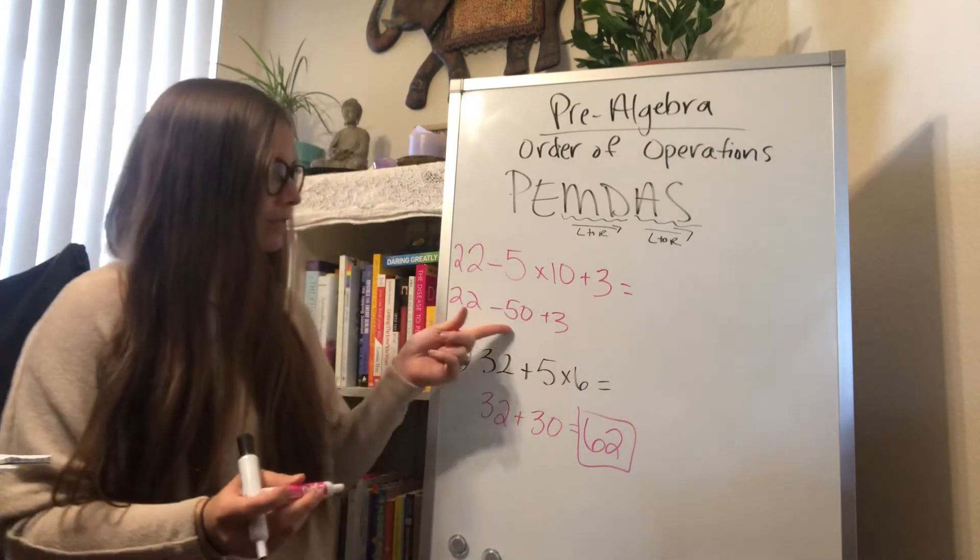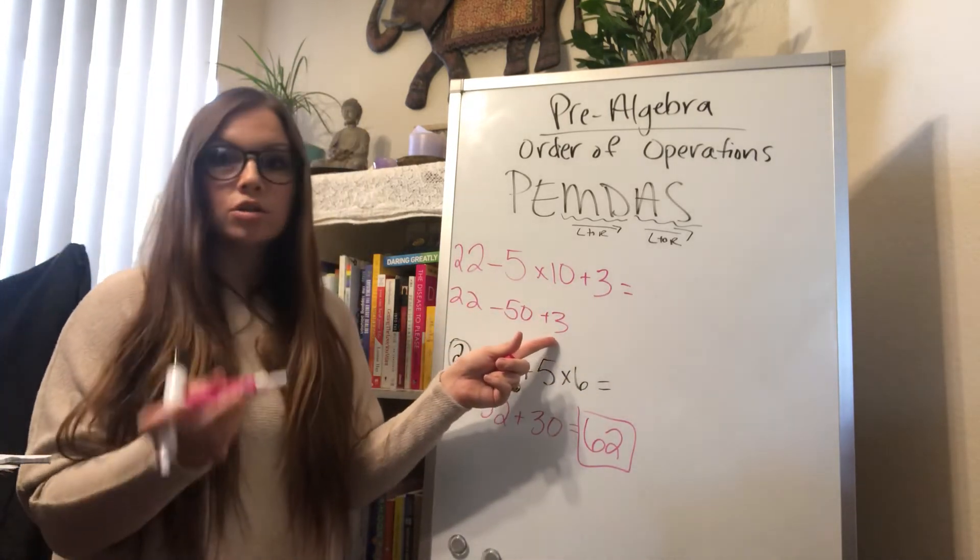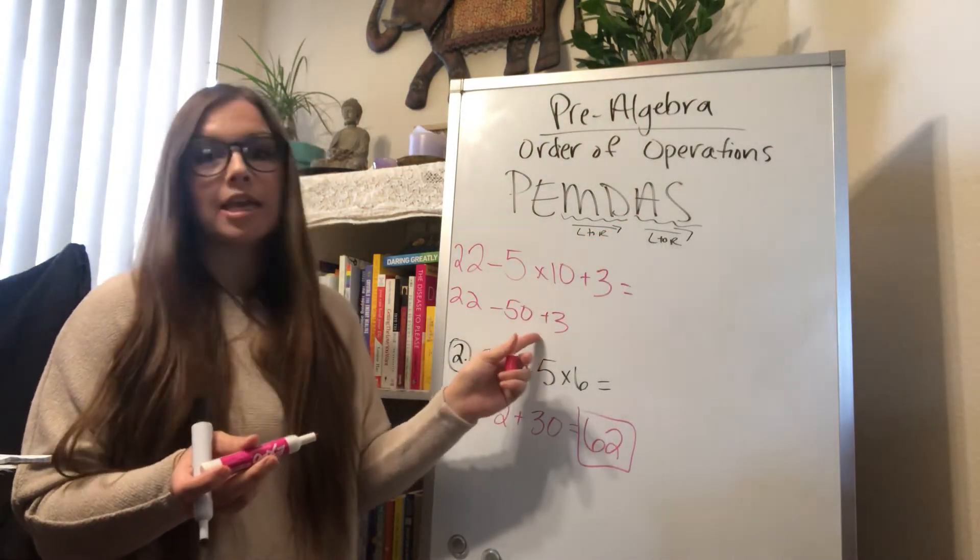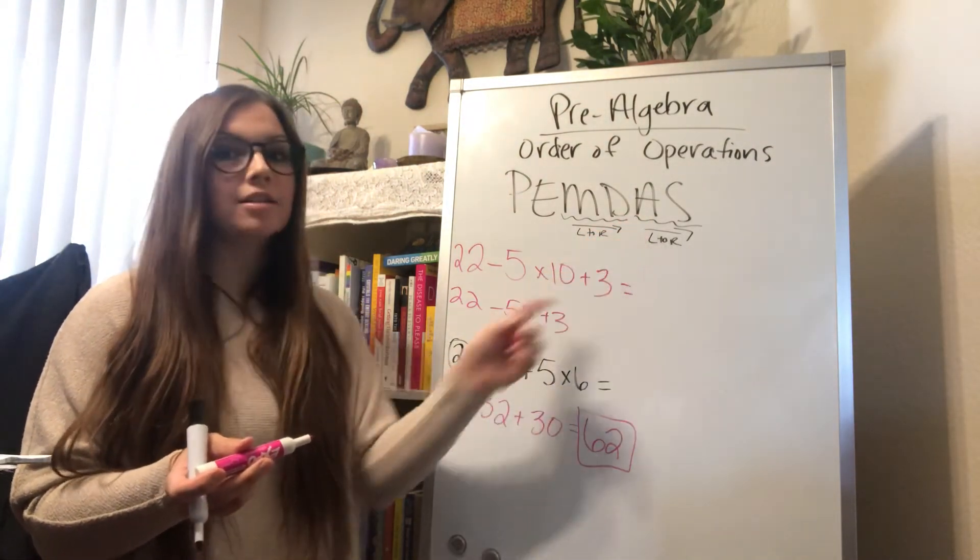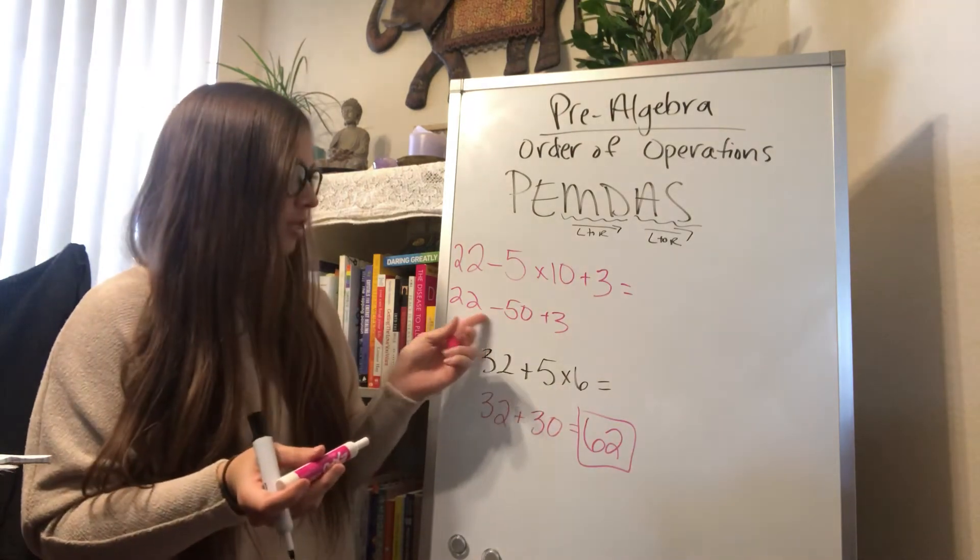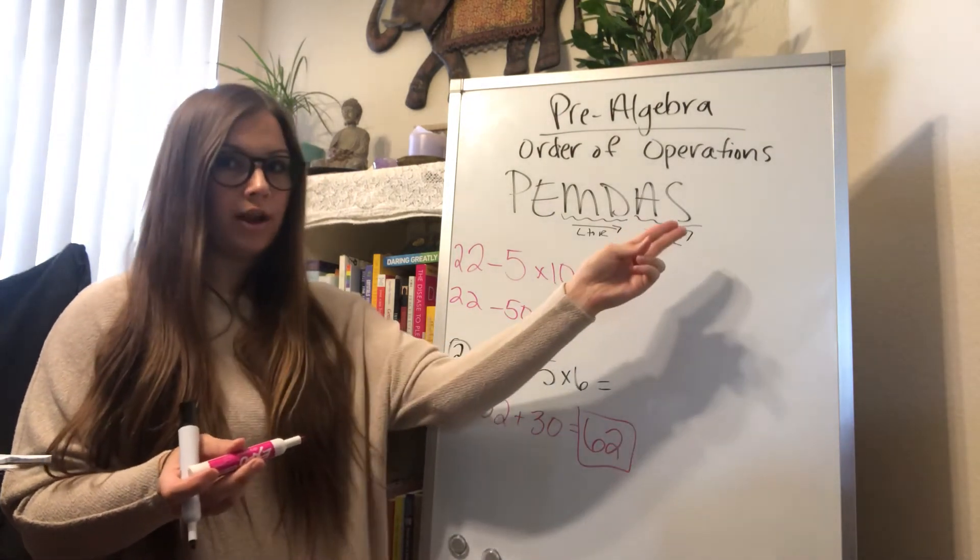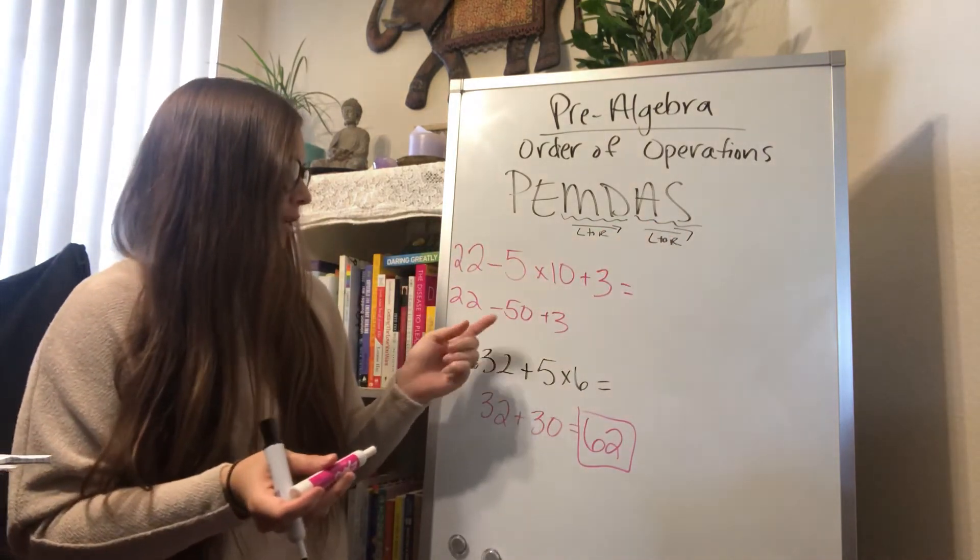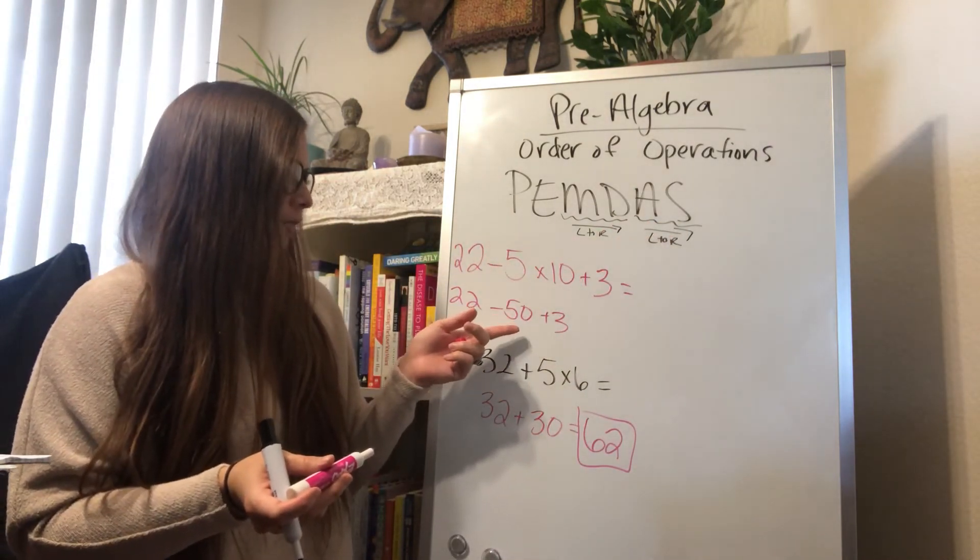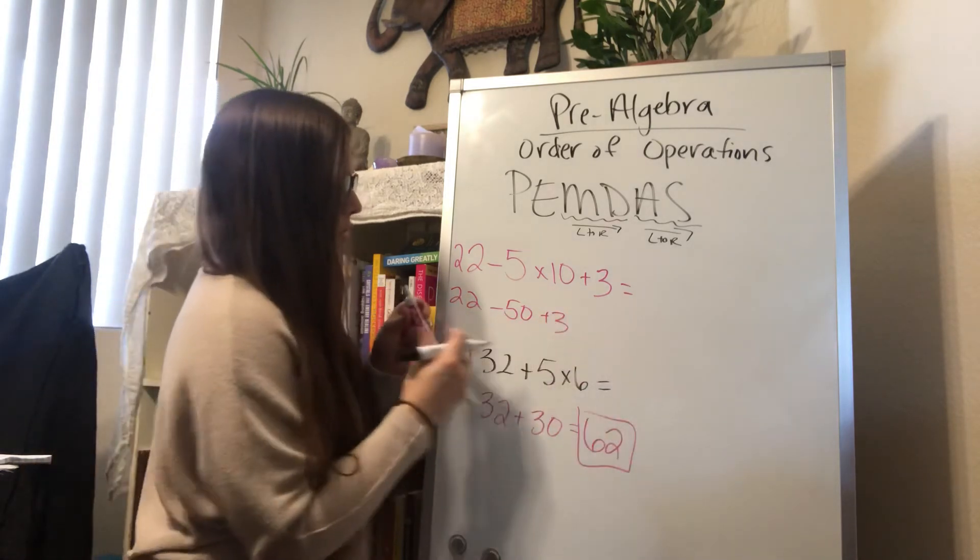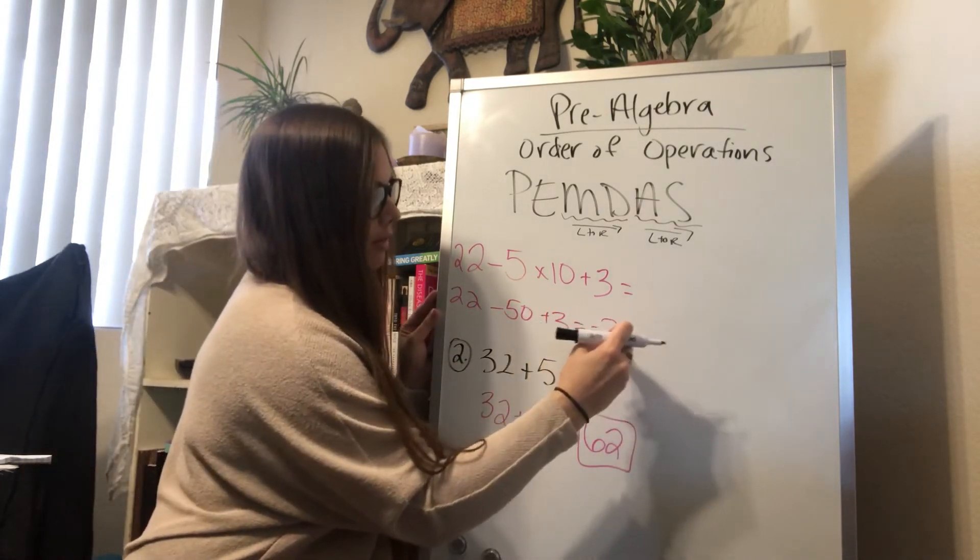So now I have 22 minus 50 plus 3. So do I have to add before I subtract? In this case, no, because I can add and subtract left to right. So I'm actually going to subtract before I add, but that's because those are the only two I have left, so I can do them left to right. So then I'm going to do 22 minus 50, and I would get negative 28 plus 3 would be negative 25.